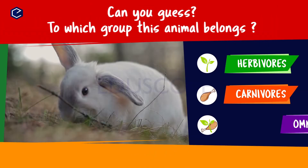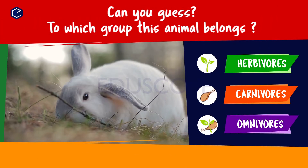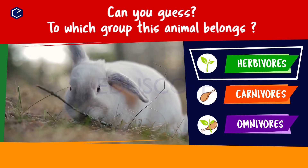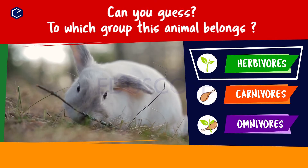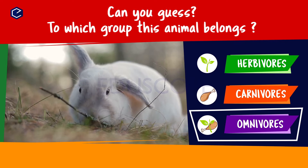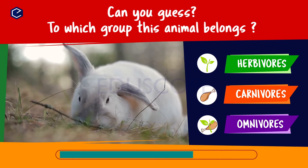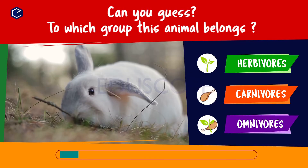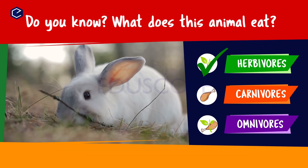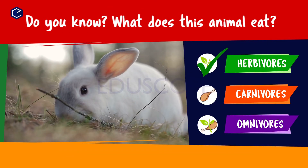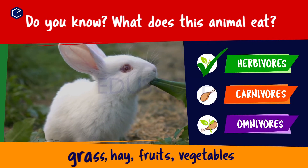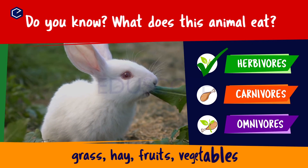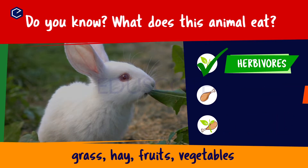Can you guess to which group this animal belongs? Herbivores, carnivores, omnivores. Do you know what this animal eats? A rabbit eats grass, hay, fruits, vegetables. So rabbit is a herbivore.